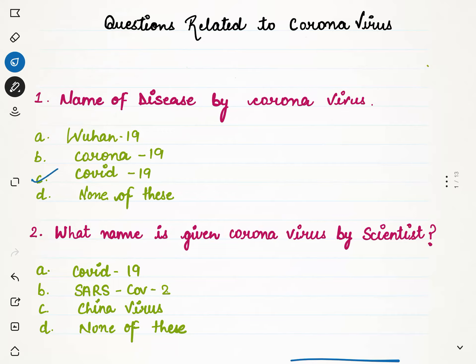What name is given to coronavirus by scientists? Coronavirus is a virus which causes a disease. This disease is called SARS-CoV-2, so option B is the correct option. SARS stands for Severe Acute Respiratory Syndrome — that is its full form.